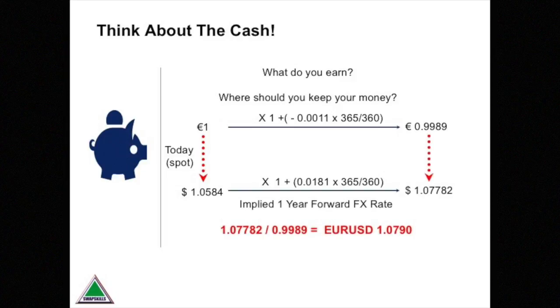Divide this number of dollars by the euros you would have earned, and you get a euro-dollar FX rate of 1.0790.